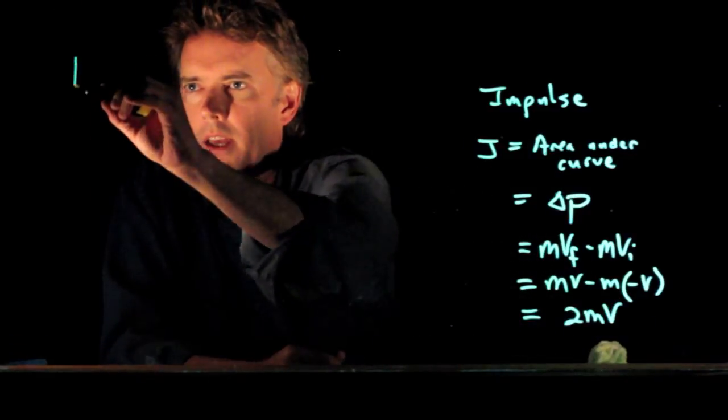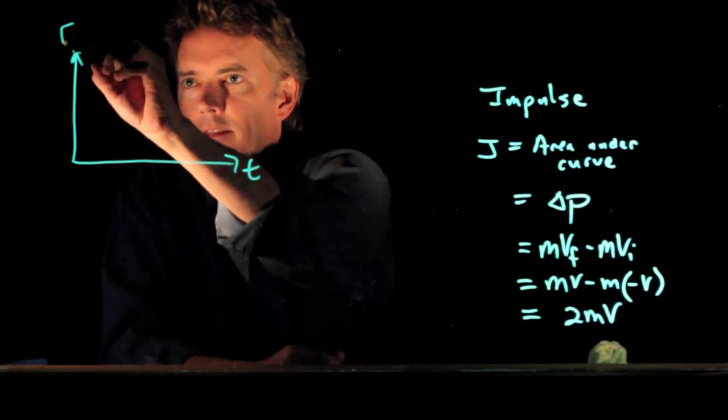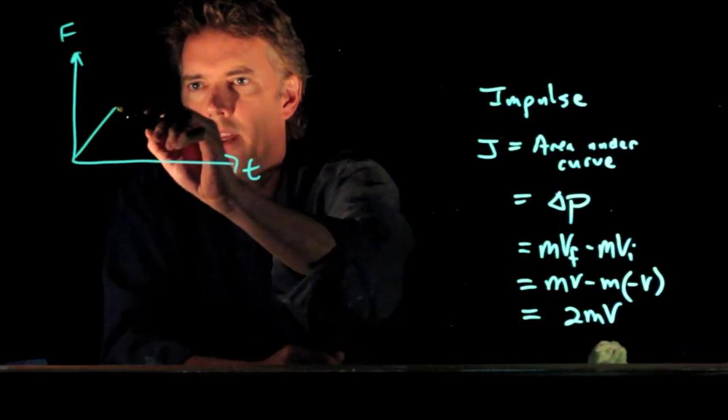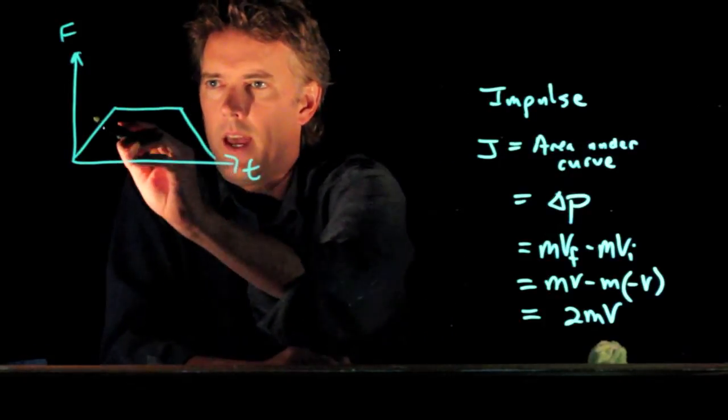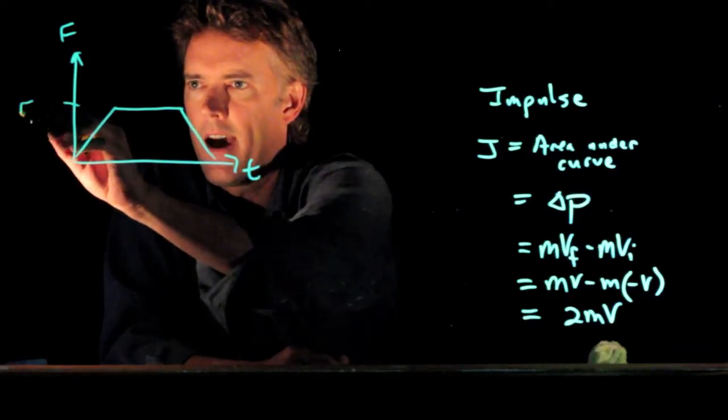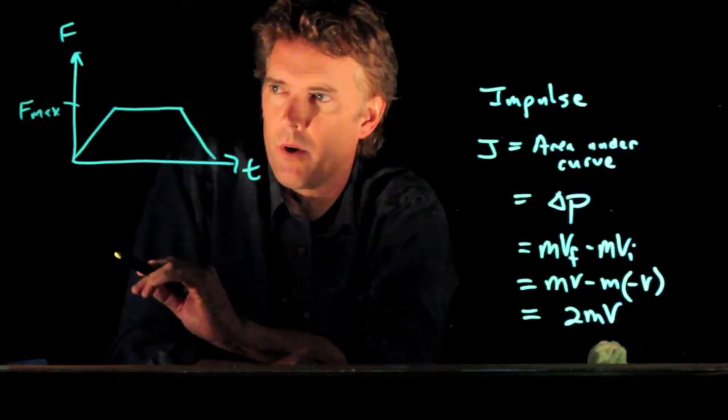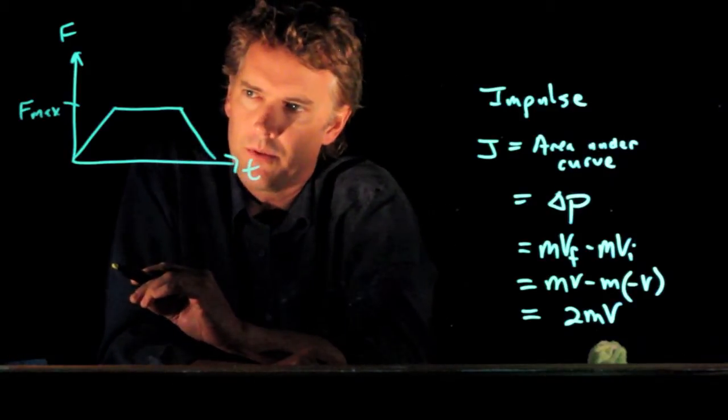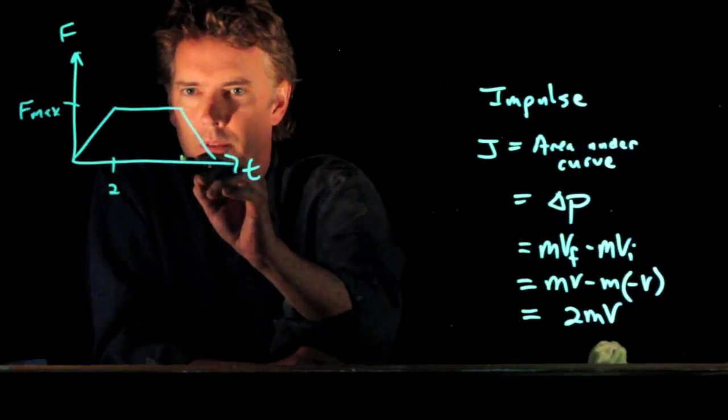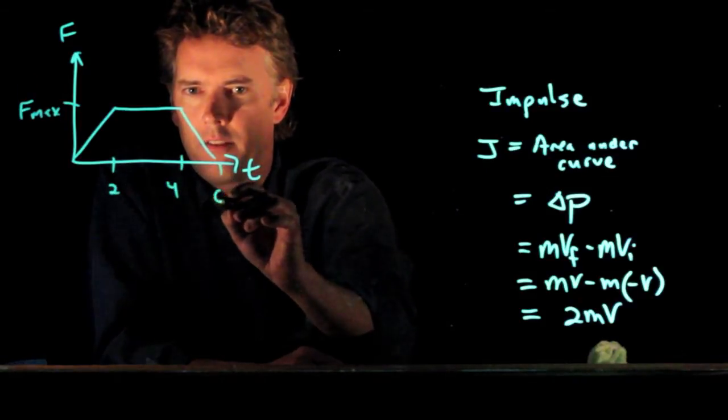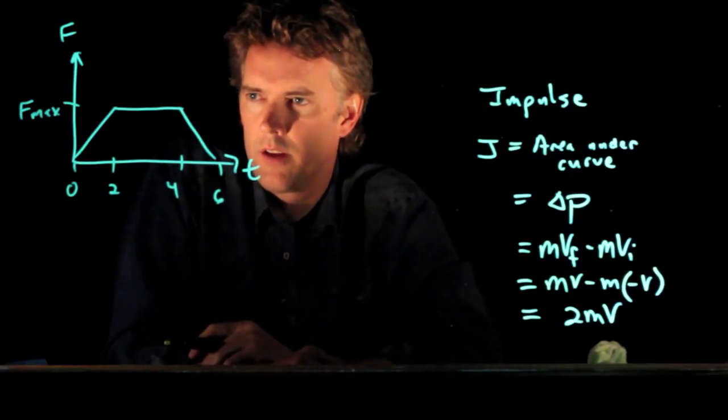All right. So let's plot this again. Here is F. And we're going to say that it does this sort of shape. And this is what we're calling F max. And let's say we want to figure out what that F max is equal to. All right. This is 2. This is 4. This is 6. This is 0 seconds.